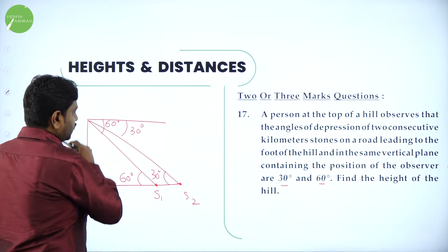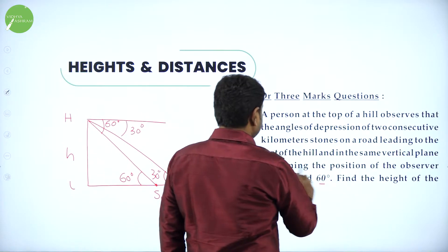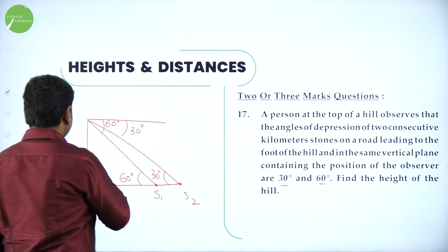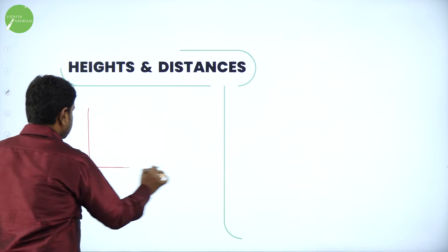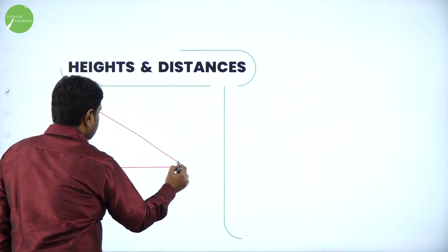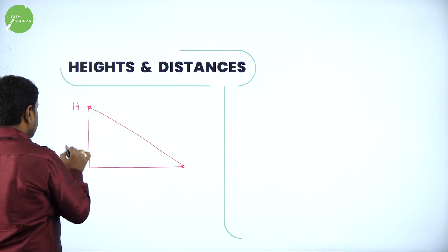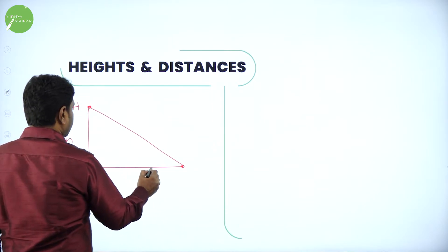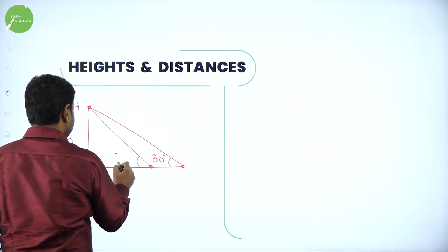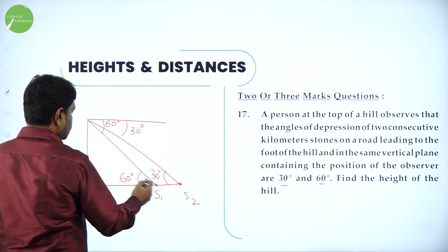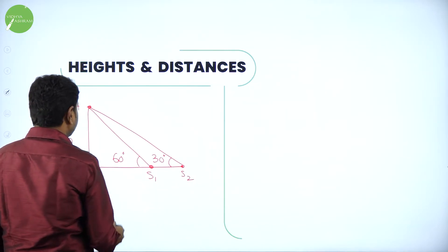They told the stones are on the same vertical plane and we want to find the height of the hill. Taking the triangles formed, we have height H and two milestones at two different points. The angle to the nearer stone S1 is 60 degrees and to the farther stone S2 is 30 degrees, giving us two triangles to work with.